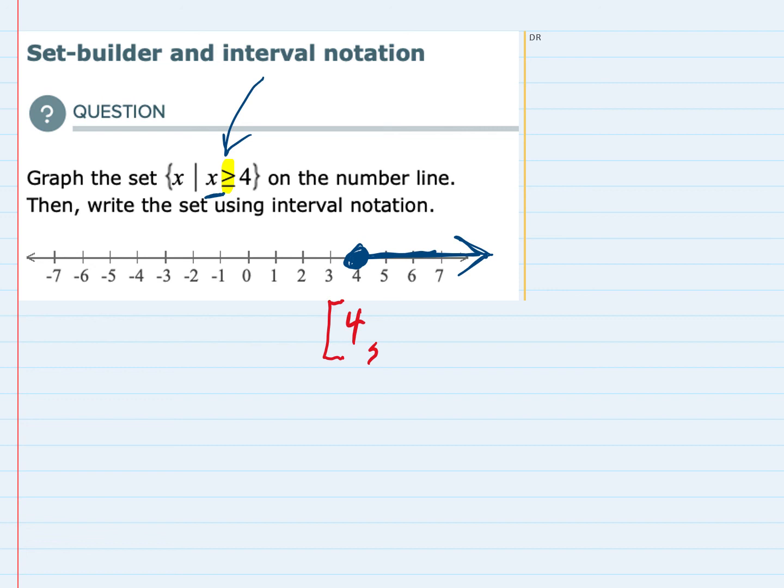If we look to the right, this arrow continues forever, so we can take values larger than 4 all the way to infinity. And since we can't include infinity, that's going to get the softer bracket. So interval notation is here written below the line.